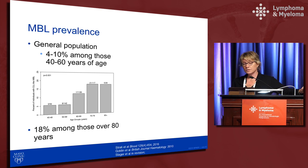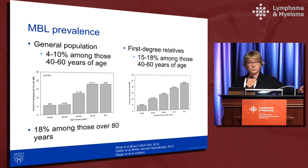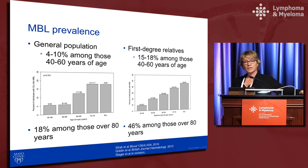Among first-degree relatives of CLL patients, the prevalence of MBL is much higher — 15–18% — and like the general population, it increases with age. In relatives over age 80, the prevalence of MBL reaches 46%, meaning almost half of individuals in these CLL families will develop MBL.